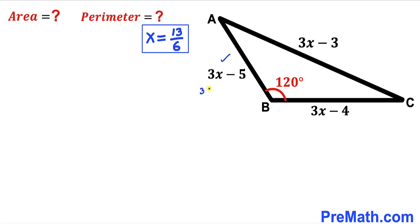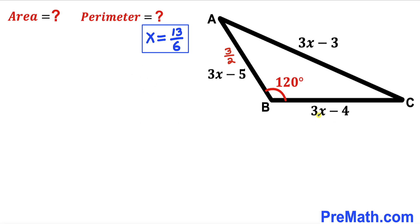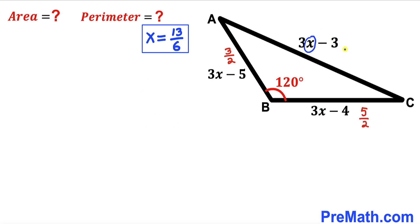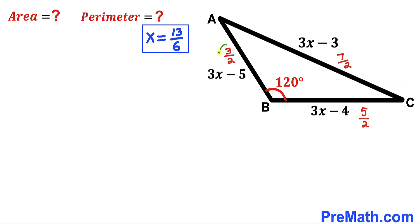Substituting x equals 13/6 into each expression: AB equals 3 times 13/6 minus 5, which is 13/2 minus 5, giving 3/2. BC equals 3 times 13/6 minus 4, which is 13/2 minus 4, giving 5/2. AC equals 3 times 13/6 minus 3, which is 13/2 minus 3, giving 7/2. So the three side lengths are 3/2, 5/2, and 7/2 respectively.